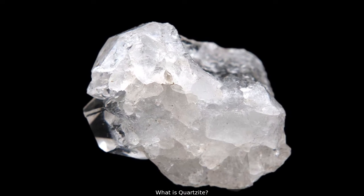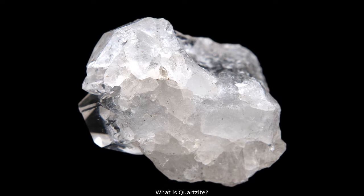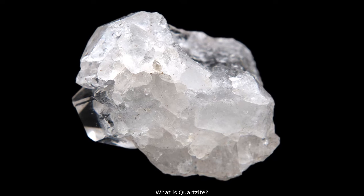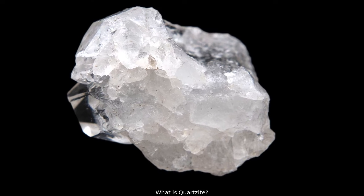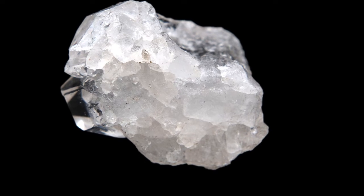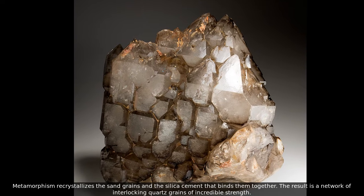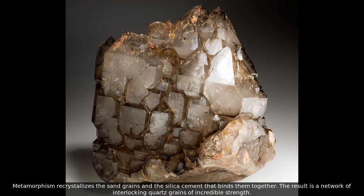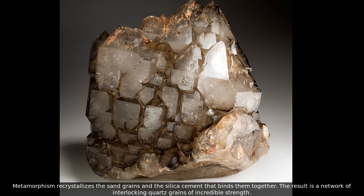What is quartzite? Quartzite is a non-foliated metamorphic rock composed almost entirely of quartz. It forms when a quartz-rich sandstone is altered by the heat, pressure, and chemical activity of metamorphism. Metamorphism recrystallizes the sand grains and the silica cement that binds them together. The result is a network of interlocking quartz grains of incredible strength.